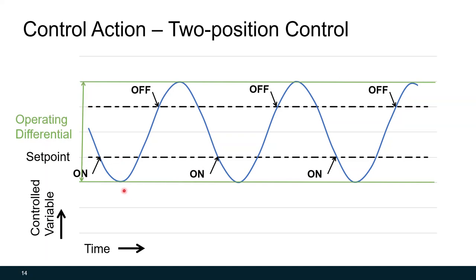The operating differential is what your space temperature truly fluctuates through during the control cycle. For example, if the set point is 70 and the control differential is 72, the operating differential might span from 69 to 73. If the control differential is too wide, the operating differential gets wider and occupants may not be comfortable. But if the control differential is too small, equipment turns on and off too frequently, leading to wear and potentially requiring early replacement.